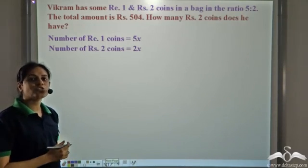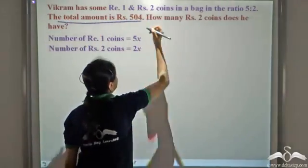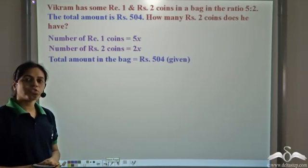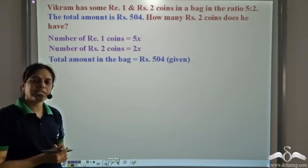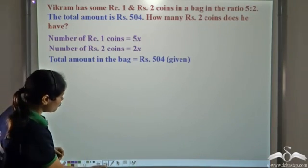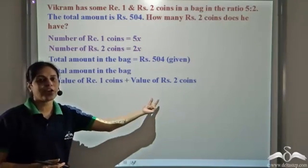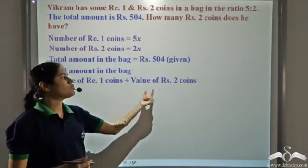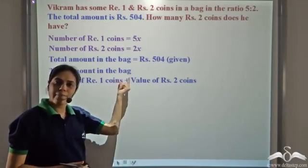The next step is to see what is given to us. It is given that the total amount in the bag is Rupees 504. Now what will be the total amount of money in the bag? It will be the value of Rupee 1 coins and the value of Rupee 2 coins, because there are 2 types of coins. The total value of Rupee 1 plus the total value of Rupee 2 coins gives us the total amount in the bag.